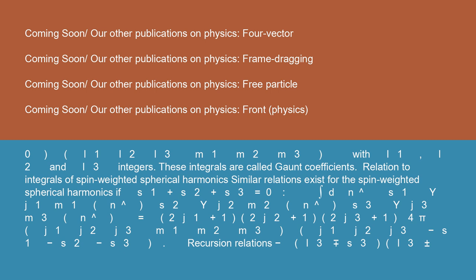Relation to integrals of spin-weighted spherical harmonics: similar relations exist for the spin-weighted spherical harmonics if S1 + S2 + S3 = 0. ∫ dΩ _{S1}Y_{J1,M1} _{S2}Y_{J2,M2} _{S3}Y_{J3,M3} = √[(2J1+1)(2J2+1)(2J3+1)/(4π)] * (J1 J2 J3; M1 M2 M3) * (J1 J2 J3; -S1 -S2 -S3).